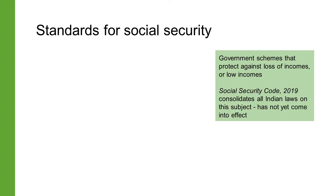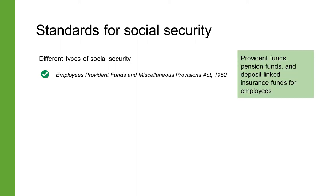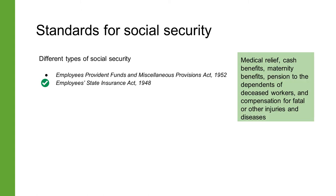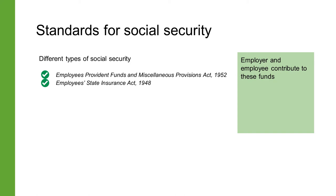The government of India has consolidated the relevant laws into a single social security code, which has not yet been brought into effect. The Employees Provident Funds and Miscellaneous Provisions Act of 1952 provides for the institution of provident funds, pension funds, and deposit-linked insurance funds for employees. The Employees State Insurance Act of 1948 provides for medical relief, cash benefits, maternity benefits, pension to dependents of deceased workers, and compensation for fatal or other injuries and diseases.